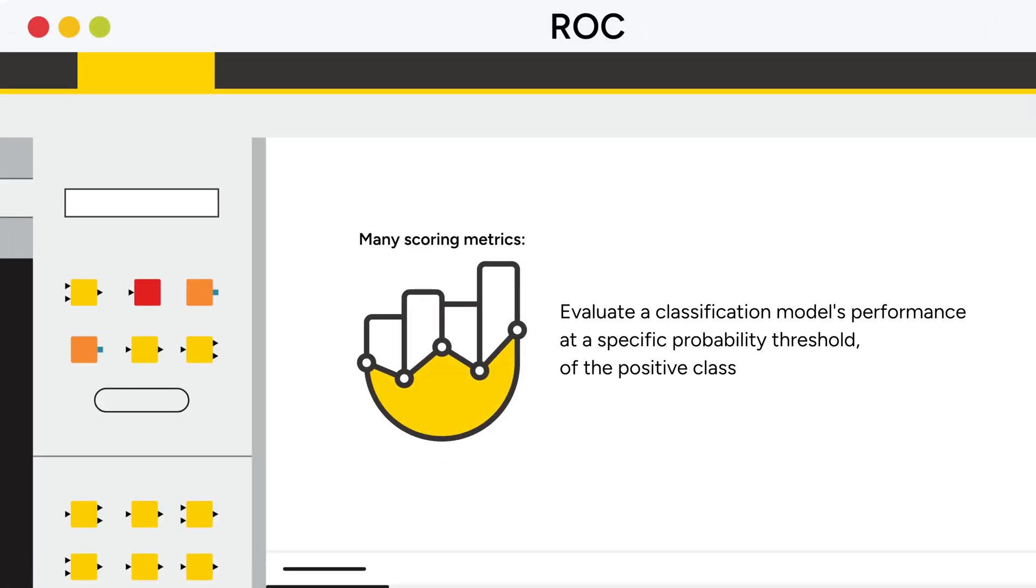Many scoring metrics measure the performance of a classification model for only one specific value of the threshold applied to the probability of the positive class. However, this is just one possible working point for the classification model.